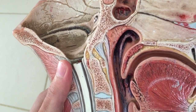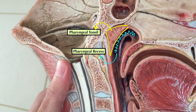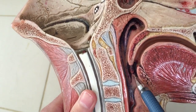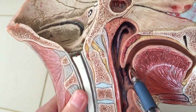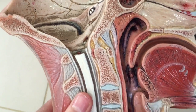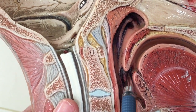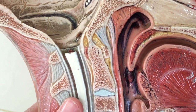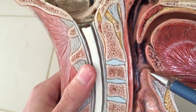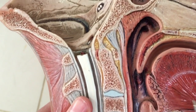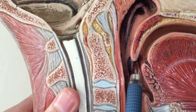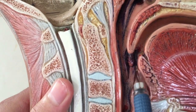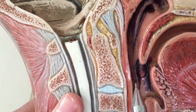Going to the oropharynx: it extends from the oropharyngeal isthmus, formed by the palatoglossal fold or arch, until the upper border of the epiglottis. The contents include the palatoglossal arch and the palatopharyngeal fold. In between is a fossa called the palatine fossa, filled with the palatine tonsil.